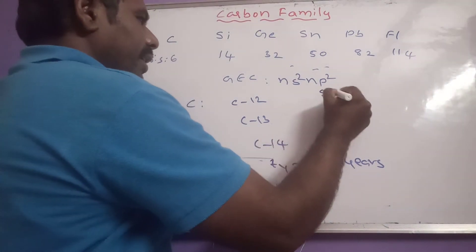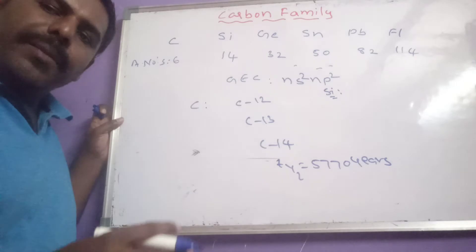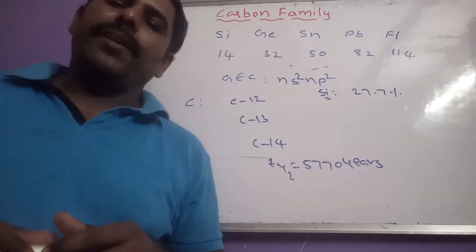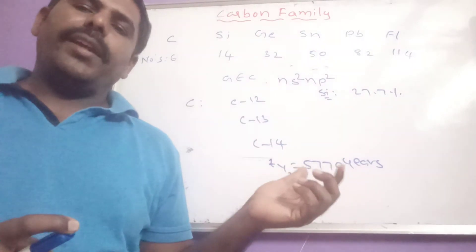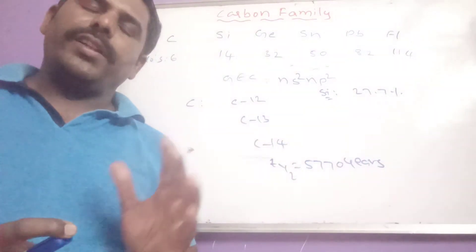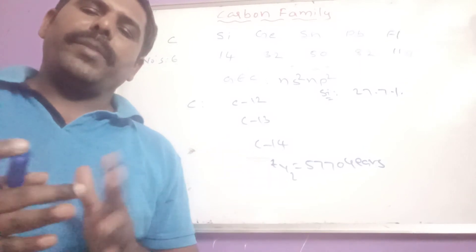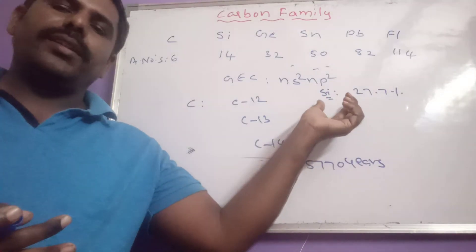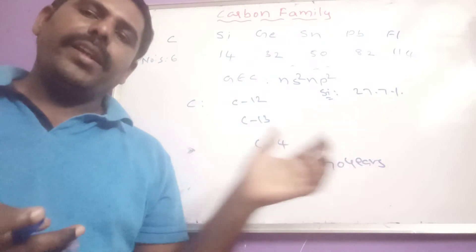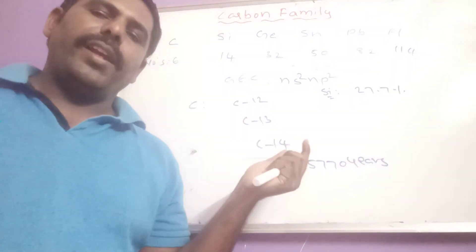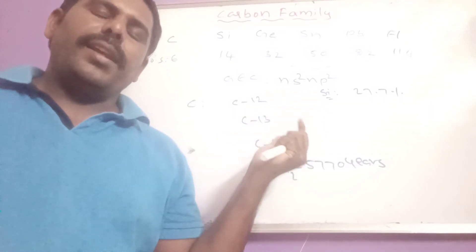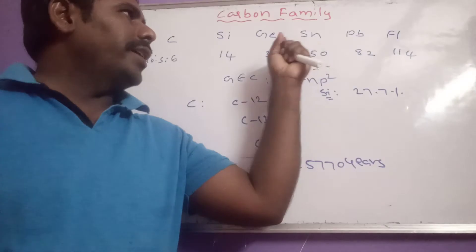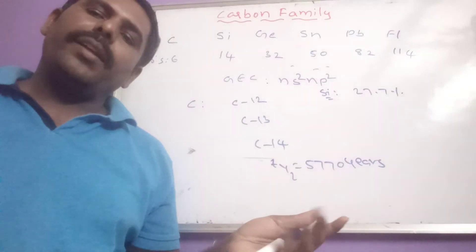Silicon is the second most abundant element in the earth's crust, with 27.7% by mass. Silicon is available in the form of silica and silicates — for example, marbles contain silicon. The remaining 4th A group elements — germanium, tin, and lead — are less abundant in the earth's crust.